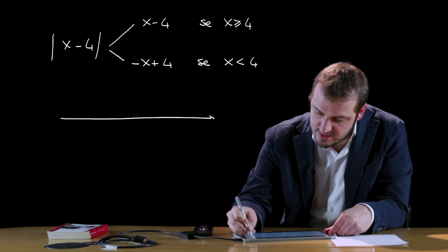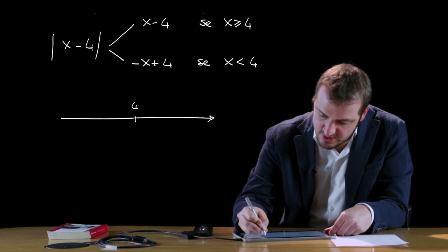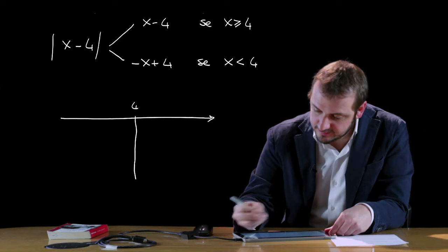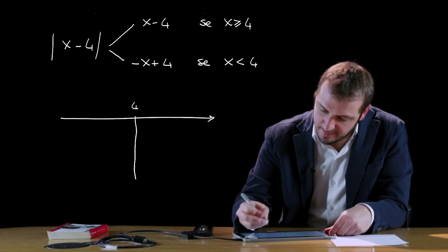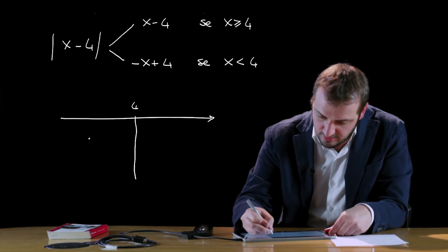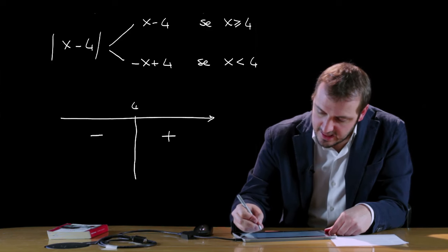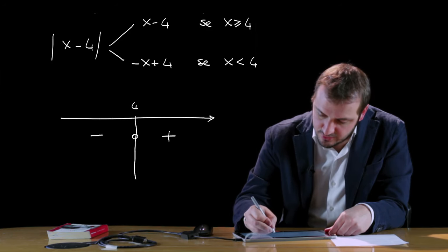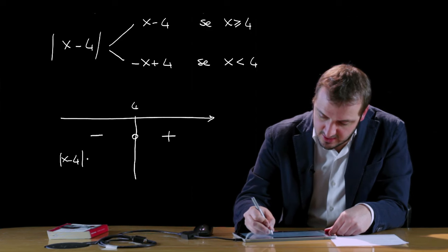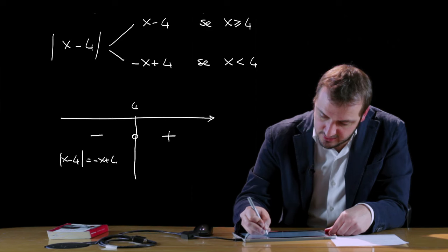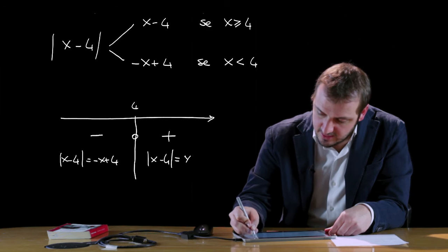Ragionando con un asse orientato, il punto 4 sancisce il divisore tra una parte in cui l'argomento è negativo e una parte in cui invece l'espressione letterale è positiva. In corrispondenza di 4 si annulla. Il modulo di x-4 in questa zona ci restituisce meno x più 4, il modulo di x-4 in questa zona ci restituisce l'argomento stesso.